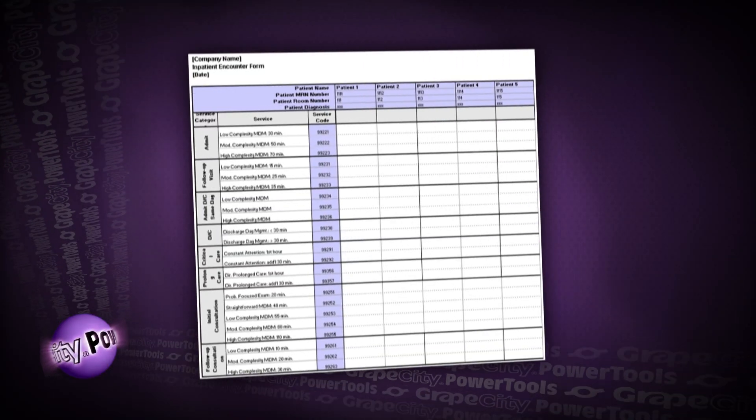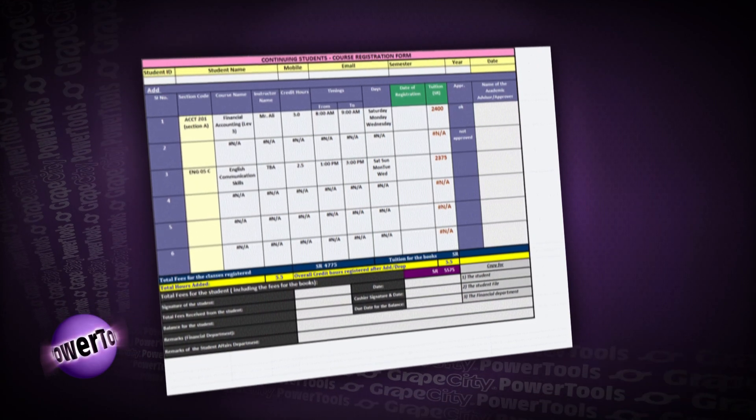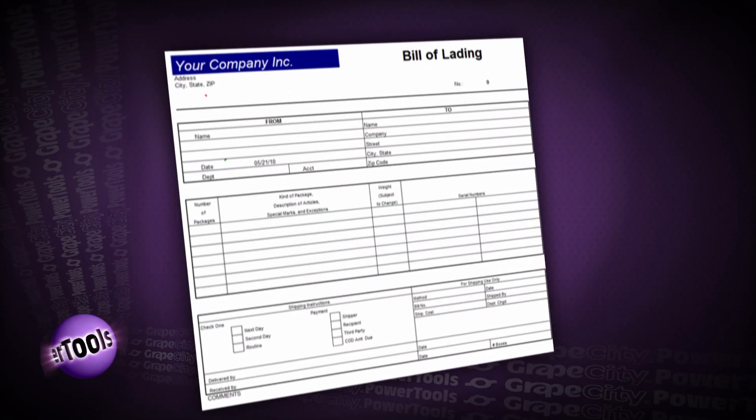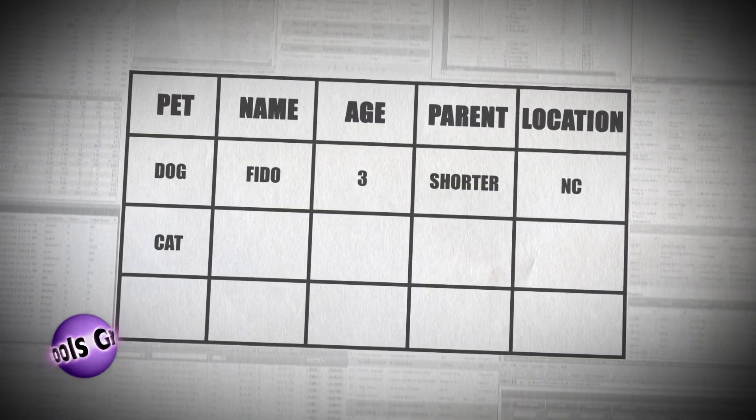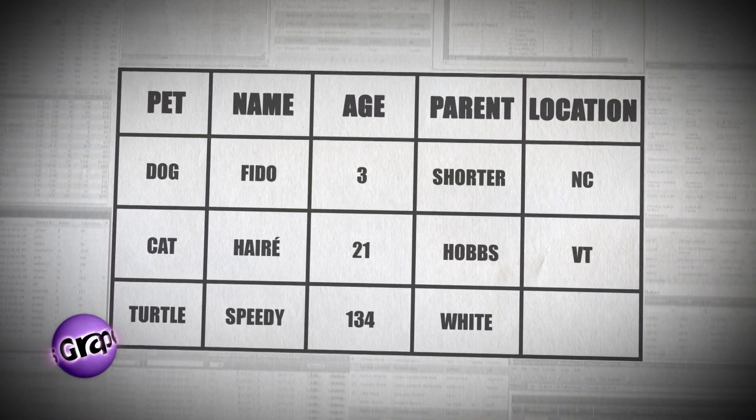Second only to your people, your information is your organization's most important asset. To help identify and interpret the relevant information, business documents need to be standardized. There are many pre-made document templates available, but finding one that matches your need exactly can be difficult, if it's even possible at all. Wouldn't it be nice to create your own business documents with programmatic control and within the security of the .NET framework? Grids are good for tabular data, but you cannot create sophisticated business documents using a grid.